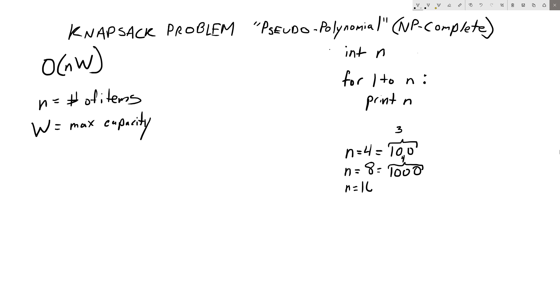If N equals 16, then, of course, it's going to be 1, 0, 0, 0, 0. And now the length of our input in bits is 5. Once again, we've increased the length of our input by just 1, but the time that our algorithm takes to execute has doubled.